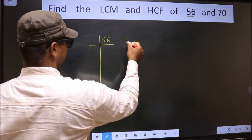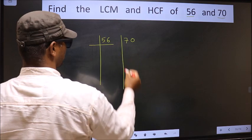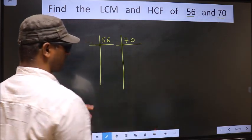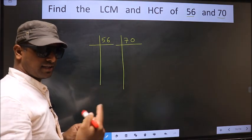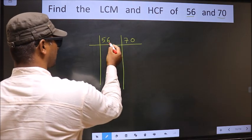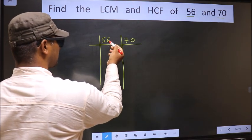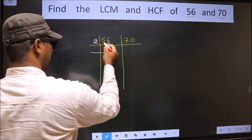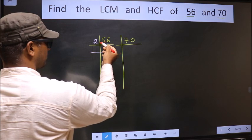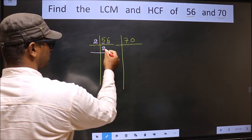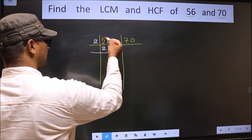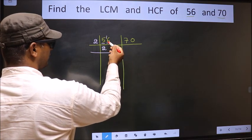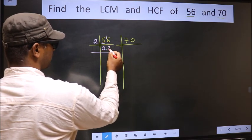56, 70. For this number, last digit 6, even, so we take 2 here. The first number 5, a number close to 5 in the 2 table is 4. 5 minus 4 is 1, carried forward making it 16. When do we get 16 in the 2 table? 2 times 8 is 16.